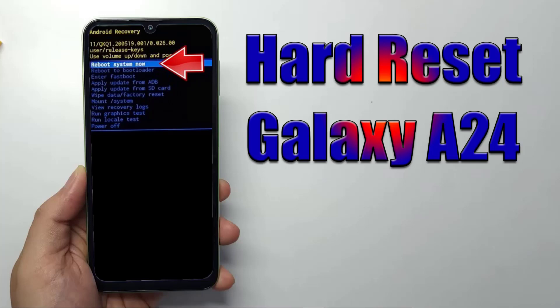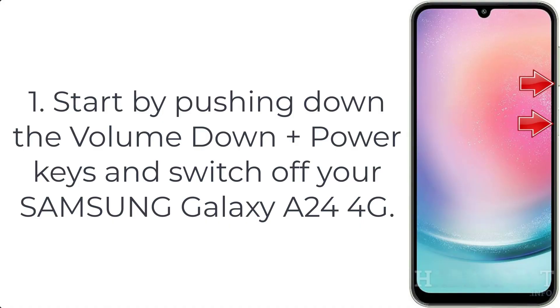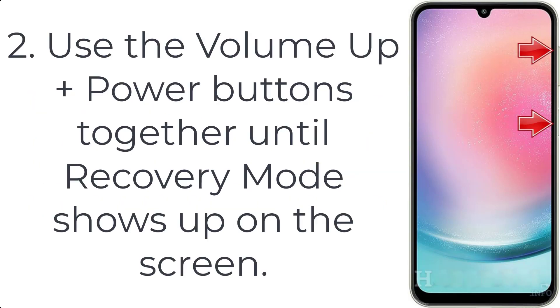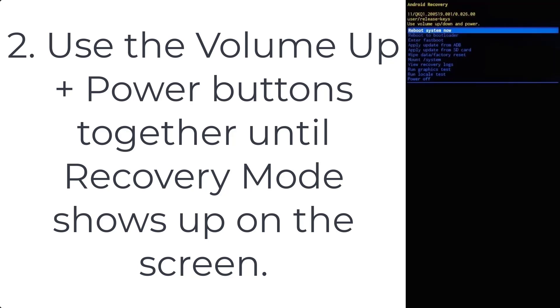How to hard reset Galaxy A24. Step 1: start by pushing down the volume down plus power keys to switch off your Samsung Galaxy A24 4G. Step 2: use the volume up plus power buttons together until recovery mode shows up on the screen.